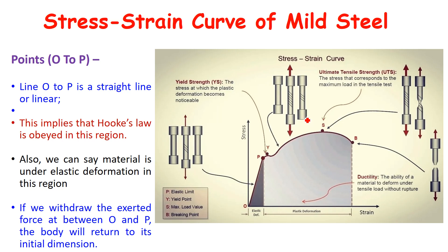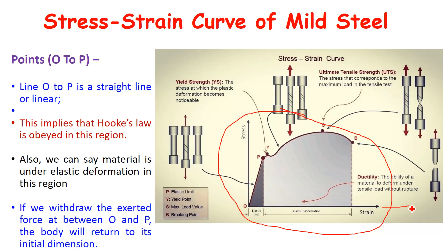In the stress-strain curve, if you look at this graph, the horizontal axis represents the strain quantity and the vertical axis, that is the Y-axis, represents the stress quantity. O is the origin, and there are different points on this curve: point P, point Y, point S, and point B.